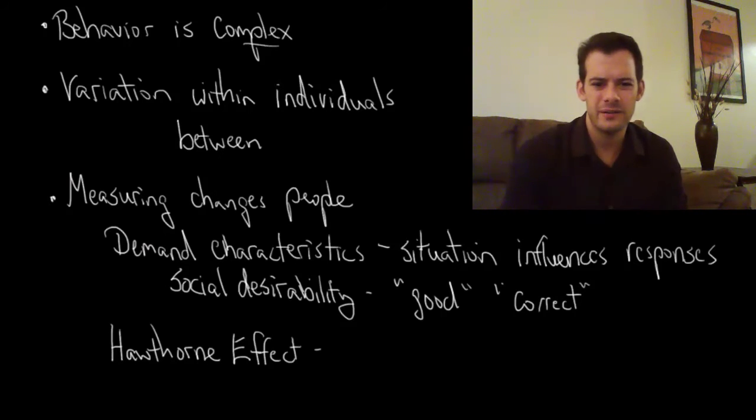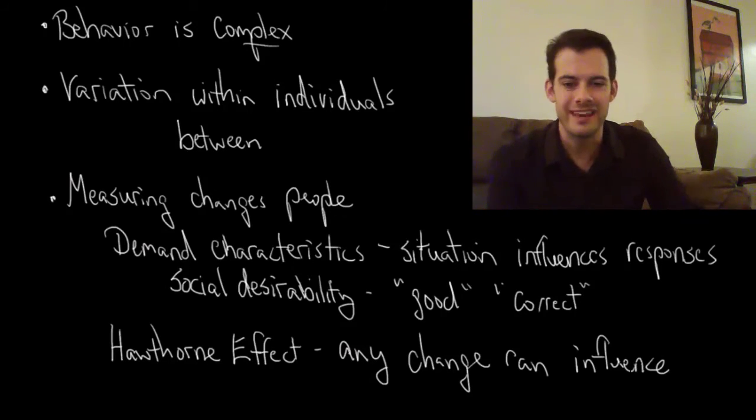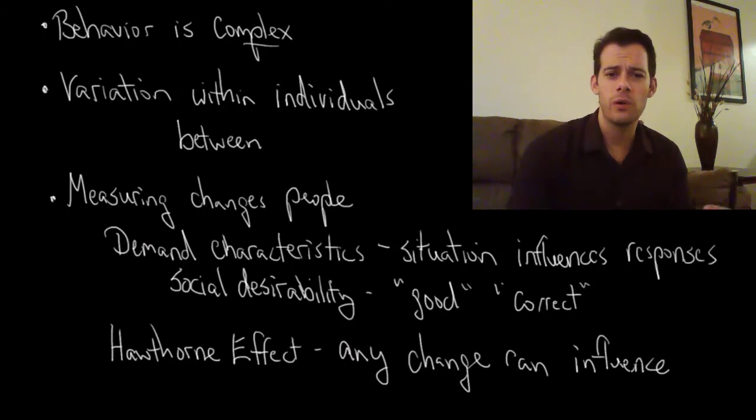So what was going on? Well, what the Hawthorne effect refers to is the idea that any changes can have an influence. So in this case, anything they changed influenced the workers, but the workers were really just responding to the fact that something changed. They weren't responding to the specific change. It wasn't actually lighting that influenced productivity, it was the fact that something in the workplace had changed. And so we can't say for sure that a particular variable is responsible for a change when maybe it was the case that just having a change had an influence.